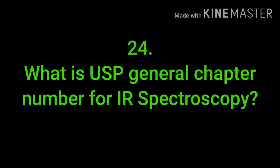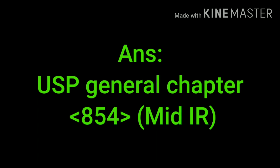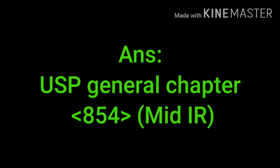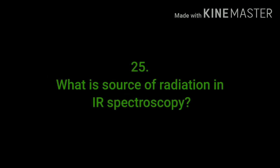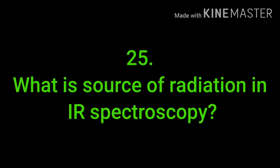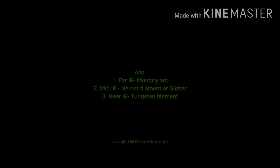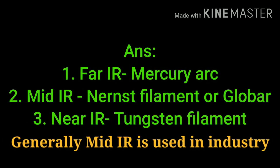What is the USP chapter number for IR spectroscopy? The USP general chapter number is 854, used for IR spectroscopy. What is the source of radiation in infrared spectroscopy? For far IR, a mercury arc source is used. For mid IR, a Nernst filament or Globar is used. For near IR, a tungsten filament is used. Generally, in the industry, mid IR is used.